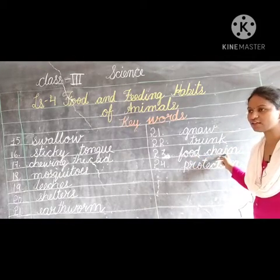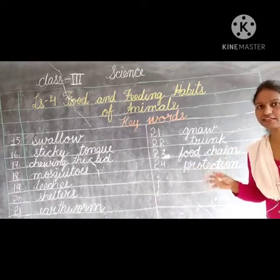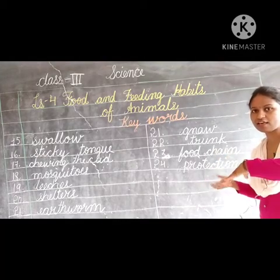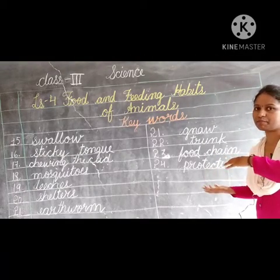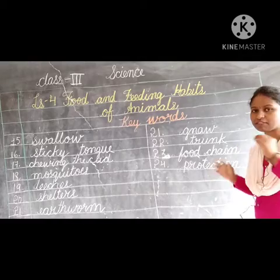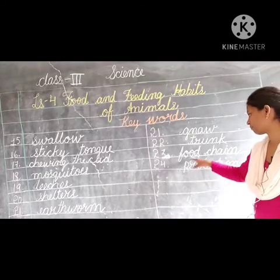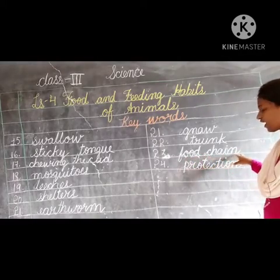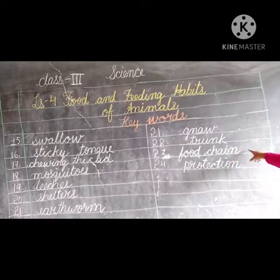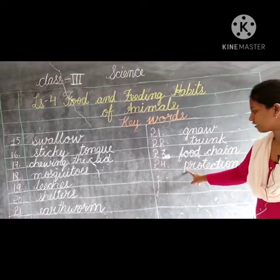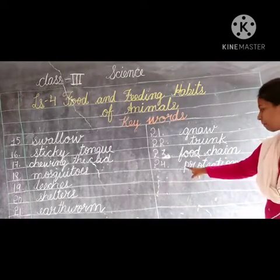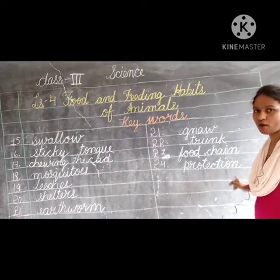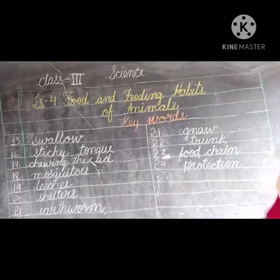Do you all know food chain? The plant, the hen eating the insects, and the hen being eaten by the lion or other flesh-eating animal - that is called a food chain. F-O-O-D, food, C-H-A-I-N, chain - food chain. The last one is 'protection' - P-R-O-T-E-C-T-I-O-N, protection.